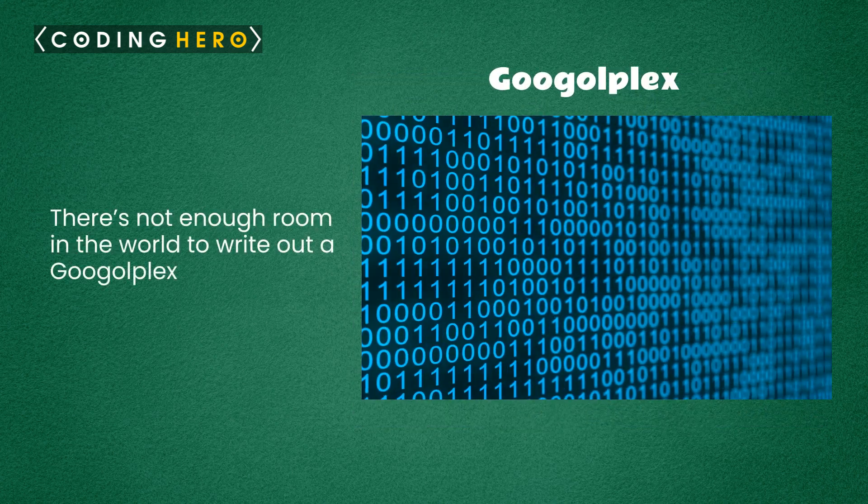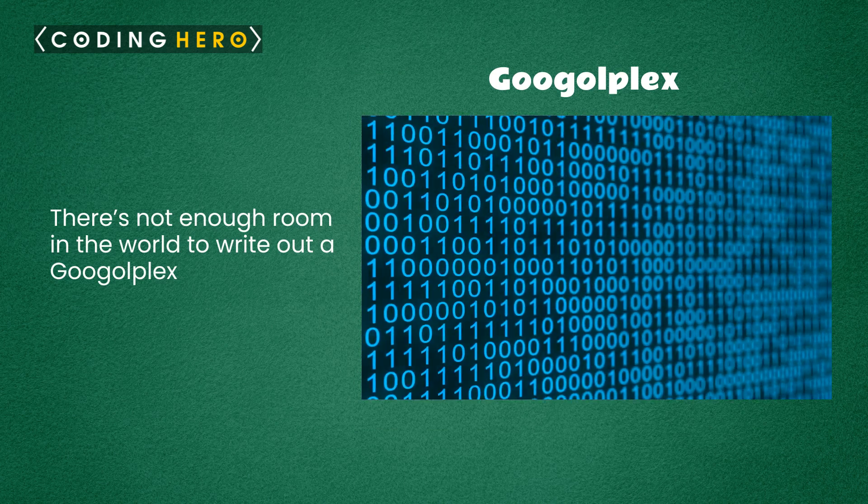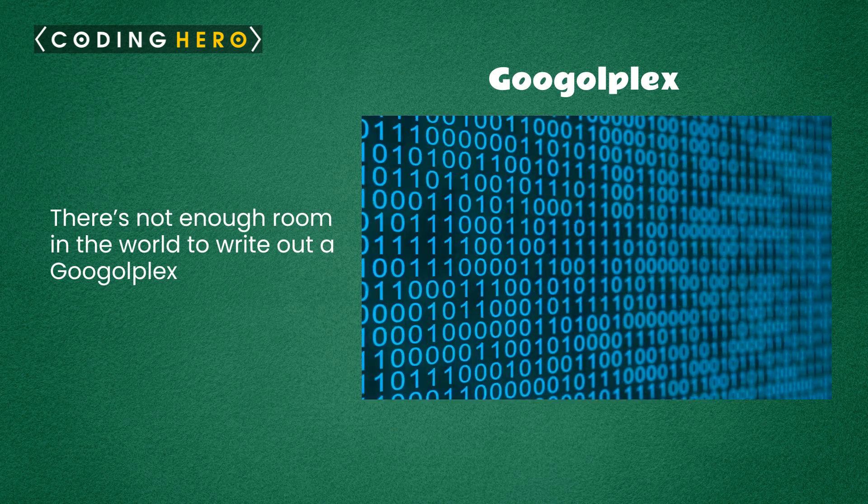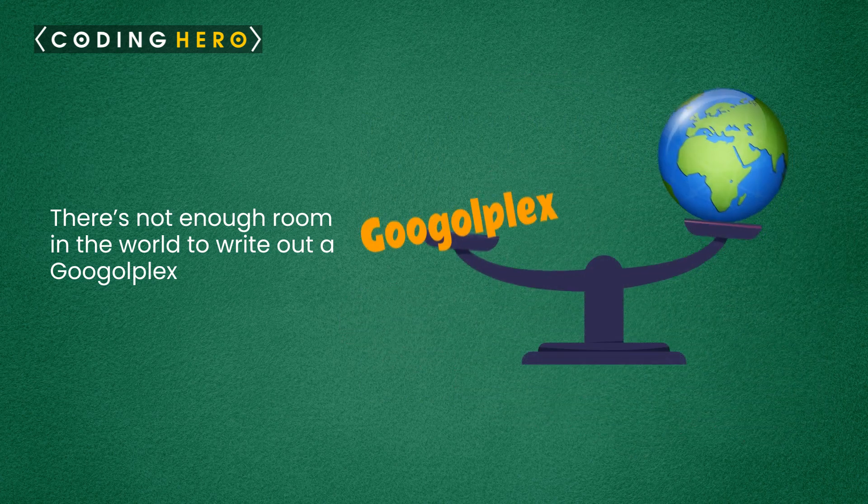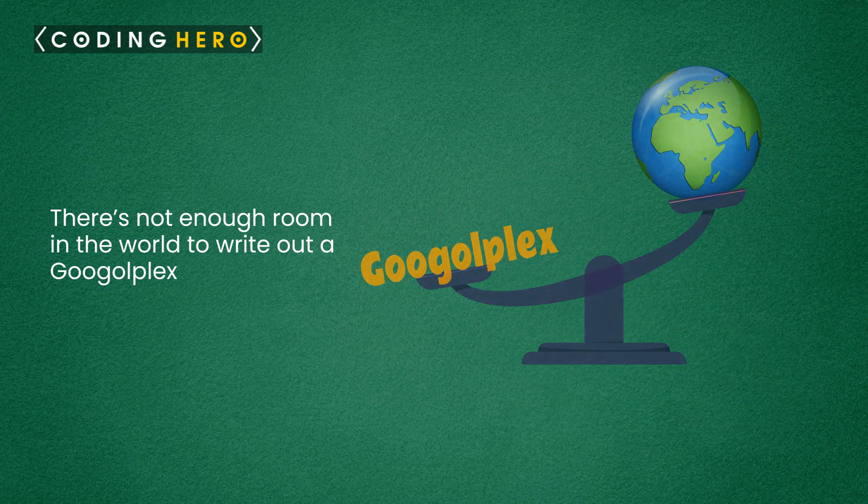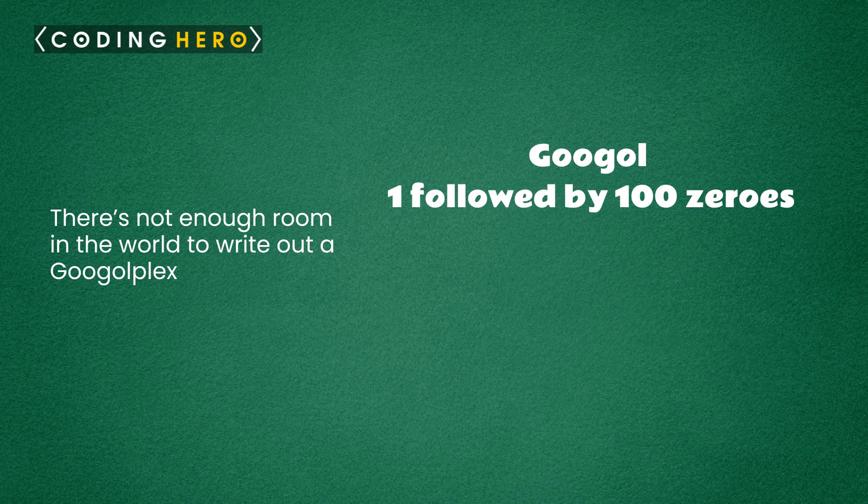There's not enough room in the world to write out a googolplex. If you start writing googolplex and print it out in a volumized series of books, it would weigh more than the entire planet. A googol means 1 followed by 100 zeros.